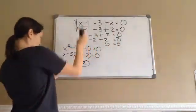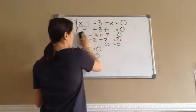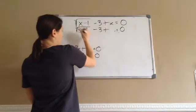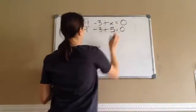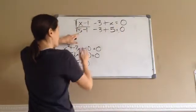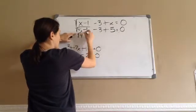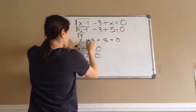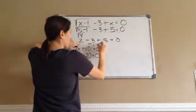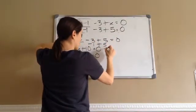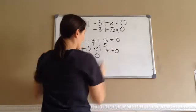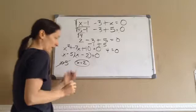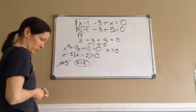Now try x = 5: 5 minus 1 is 4. Square root of 4 is 2. Then 2 minus 3 plus 5 equals 0. 2 minus 3 is negative 1, plus 5 is 4. 4 does not equal 0, so this is not true. Therefore the final answer is just x = 2; x = 5 is extraneous.